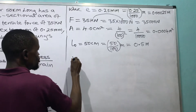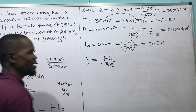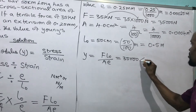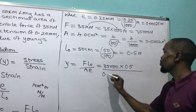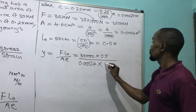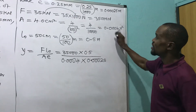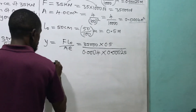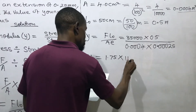Now Young's modulus equals force times L₀ all over area times extension. Substituting: 35,000 times 0.5, divided by 0.0004 times 0.00025. Multiplying this out with a calculator gives us 1.75 times 10 to the power 11 Newtons per meter squared.